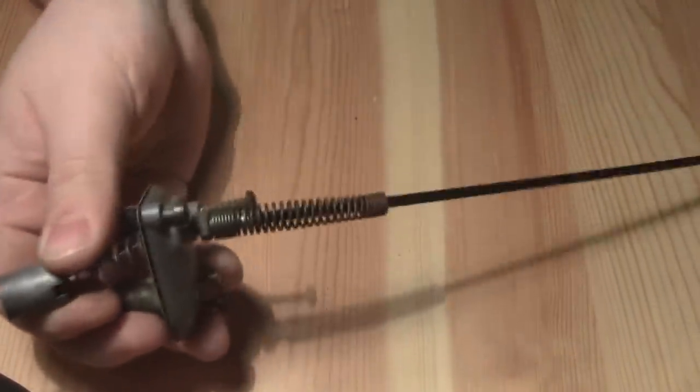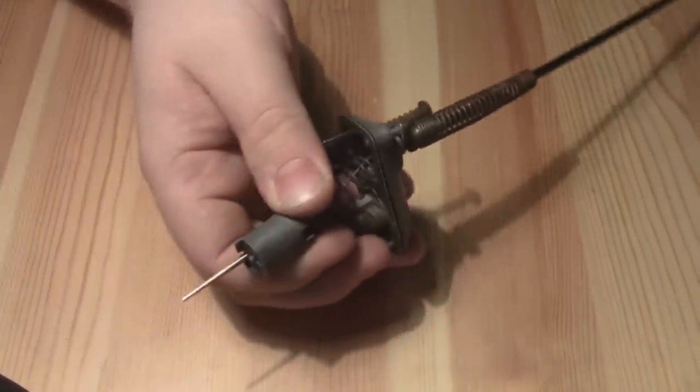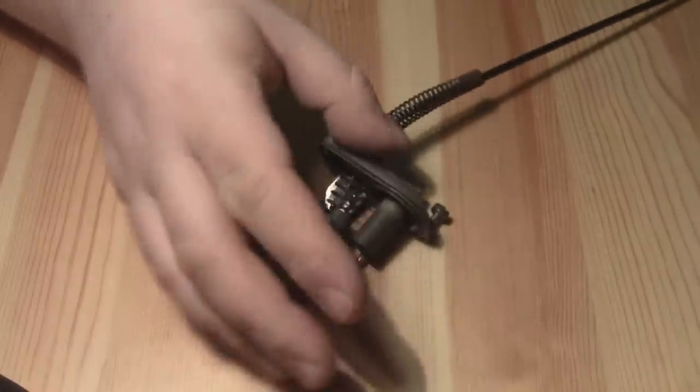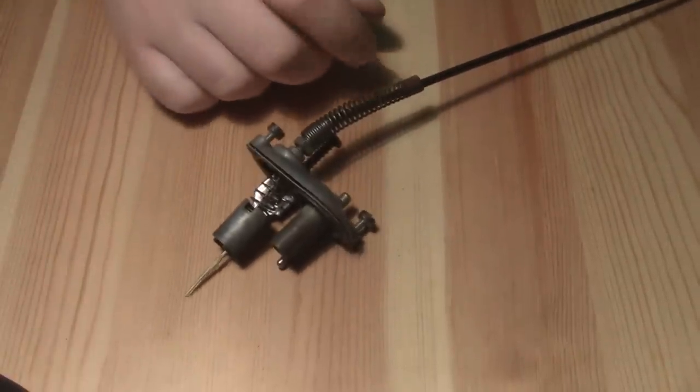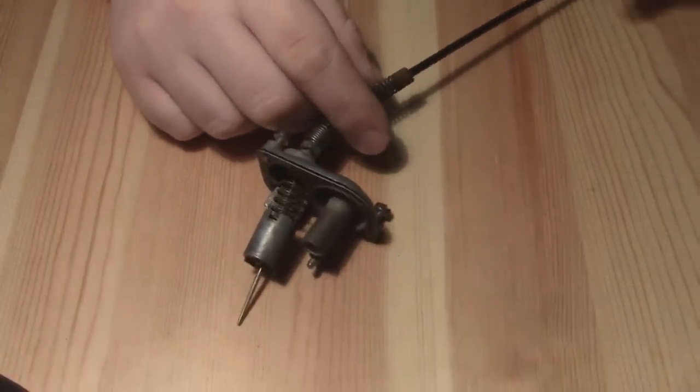Now just to try and hold everything together, I'm going to try and pull the throttle cable through to the controller as much as possible to stop it all falling apart when I try and assemble the rest of the carb.